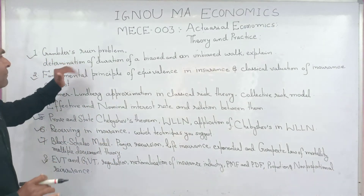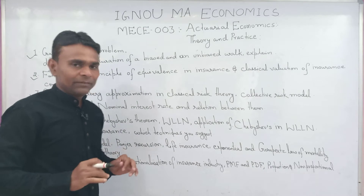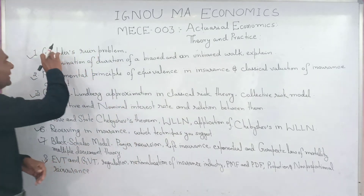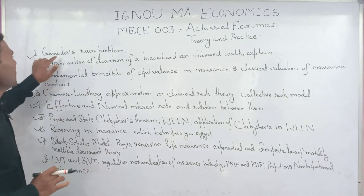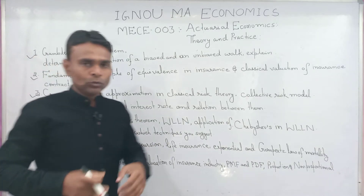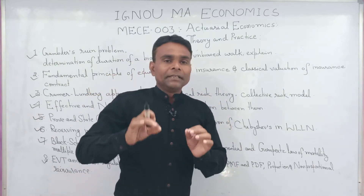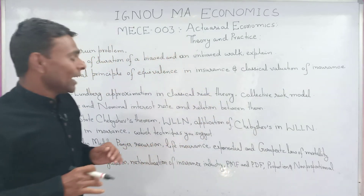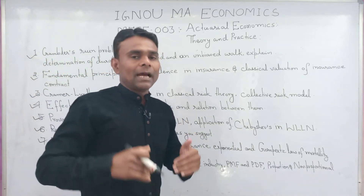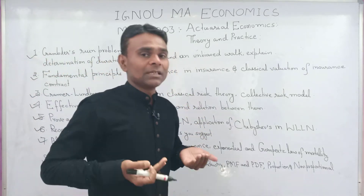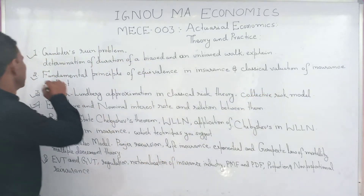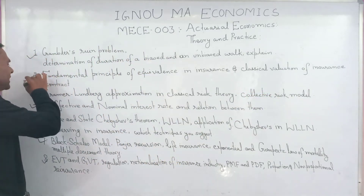So let us start with the major VBI topics. First: Gambler Ruin Problem. This is the first VBI topic — you need to prepare it very well. Also, how would you determine the duration of a biased and unbiased random walk, explained.